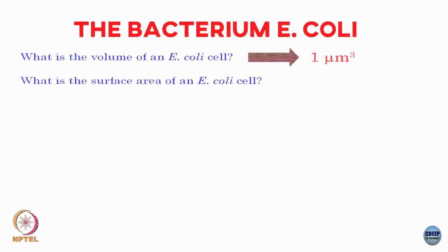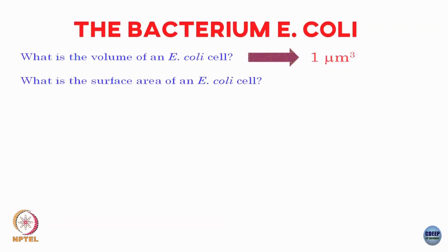What would be the surface area of an E. coli cell? We could say it is like a cylinder capped with two hemispherical caps — roughly 2 microns long and 1 micron in diameter. If you calculate the surface area it comes out to roughly 5 to 8 microns squared — something of that order.